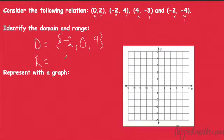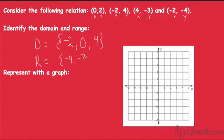Let's take a look at our range. What would our range be? We have 2, 4. Negative 4 is the lowest. Then negative 3, and 2, and 4. So that is our domain and our range.